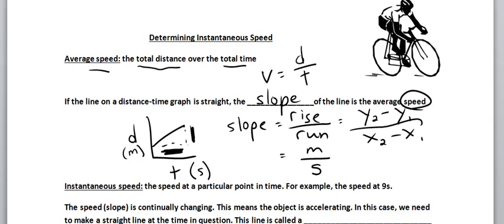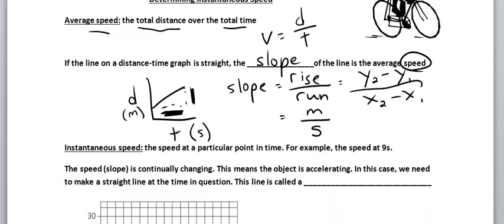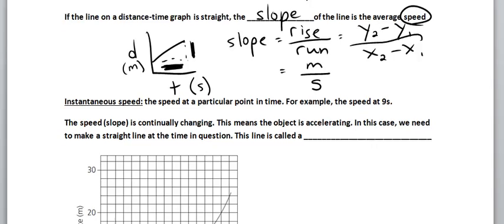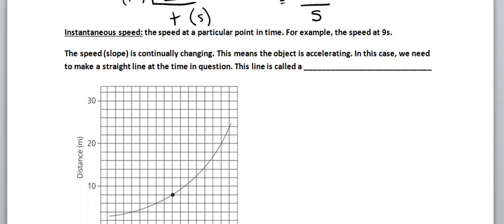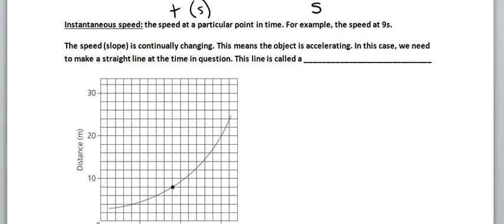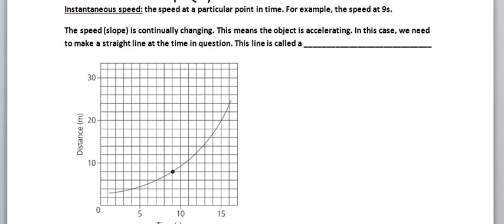But what if the line is not straight? And that's what we're going to talk about in this video. For example, what if we want to find the speed at a particular point in time, the speed at 9 seconds exactly.